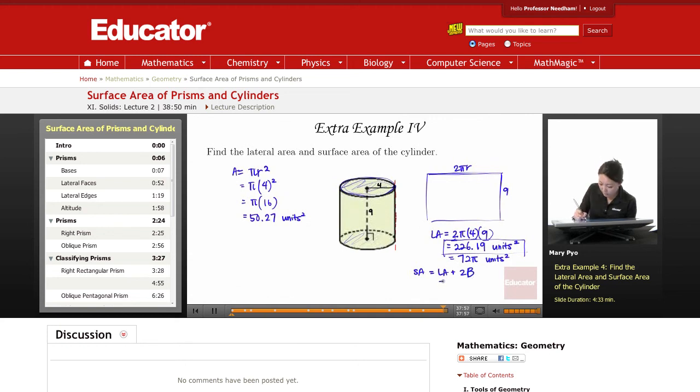So this is 226.19, I'm going to use this number up here, plus 2 times 50.27. And then using your calculator, solve that out.